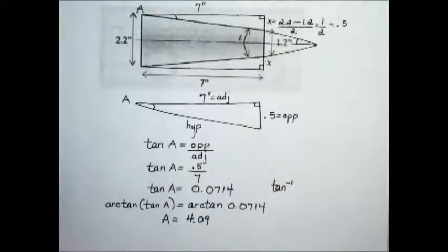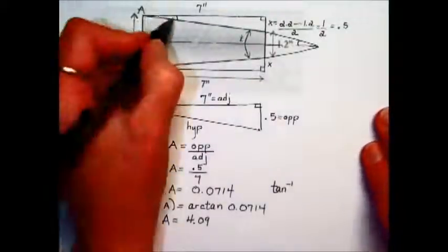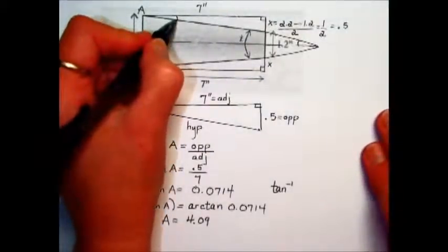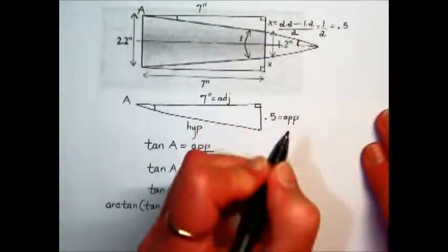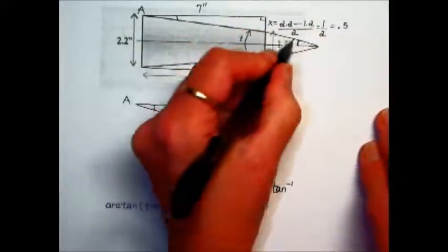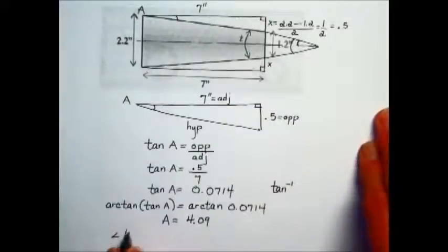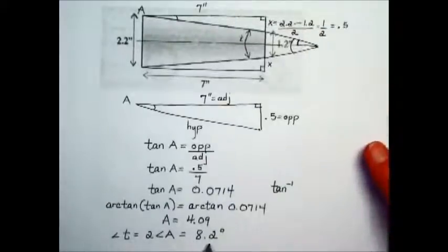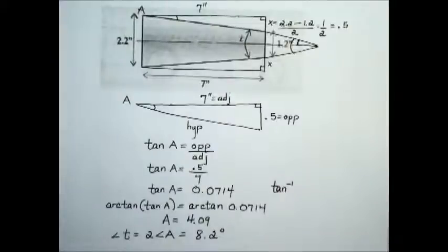We're not done, though. If you return back to the diagram, we were determining this angle here, which is equivalent to this angle. The question, though, is to find the measure of the taper angle, which means to find angle T, the taper angle. We need to double or multiply the angle that we found to come up with our value for this problem. Doubling 4.09 and rounding to the nearest tenth gives us a taper angle of 8.2 degrees.